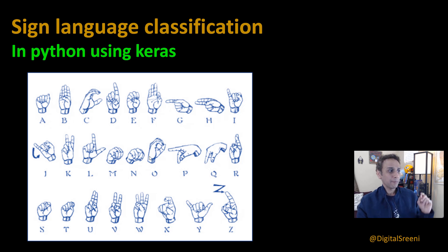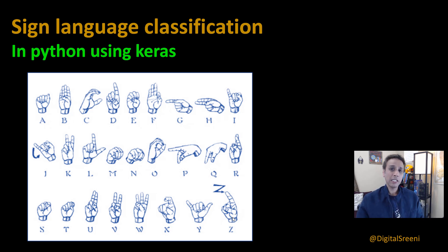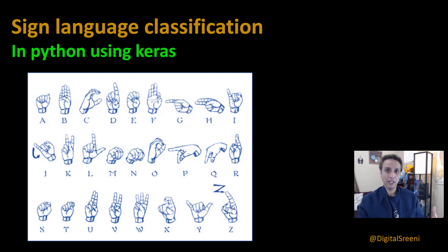A quick note: even though each English alphabet has a sign in sign language including Z, the MNIST dataset doesn't include Z. All the other signs can be interpreted using a single image, but Z involves a motion that traces the shape of Z, so it's not interpretable using a single image - that's probably why it's not included.